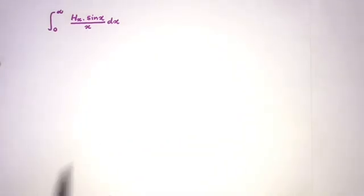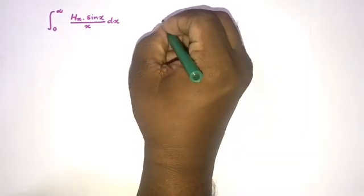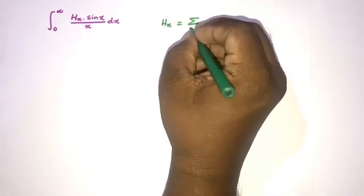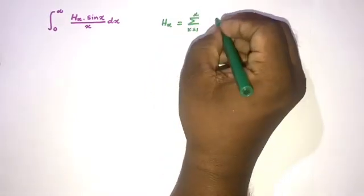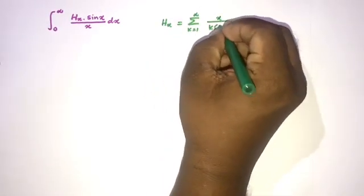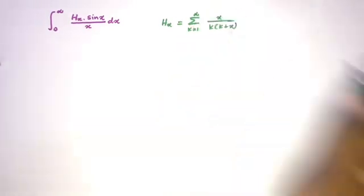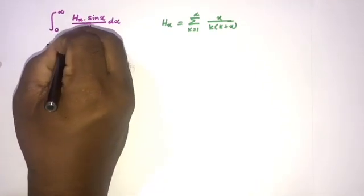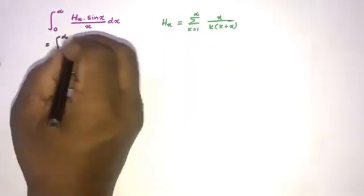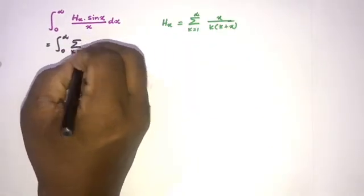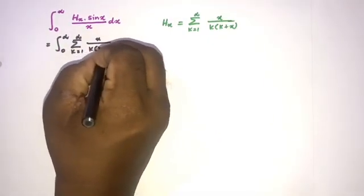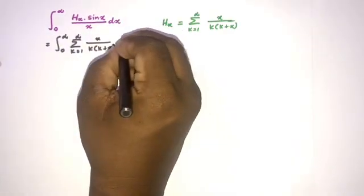How to begin? First I am going to use one definition of harmonic numbers. H(x) is equal to the infinite series: sum from k equals 1 to infinity of x over k times (k plus x). We can plug this in — instead of H(x) we write this series, so the integral becomes the sum from k equals 1 to infinity of x over k(k+x) times sine of x over x dx.